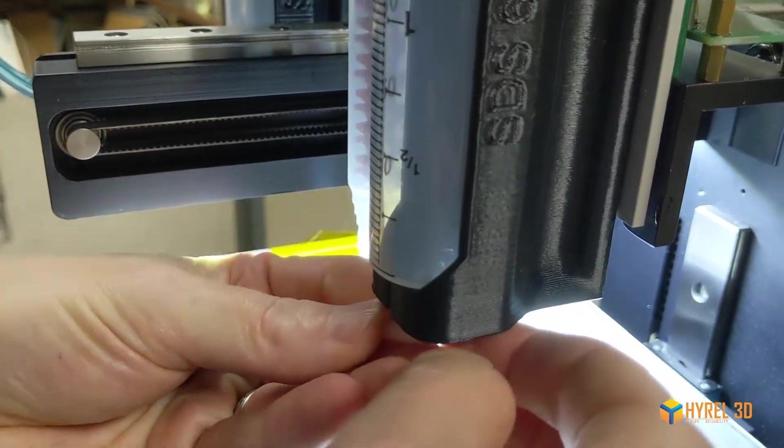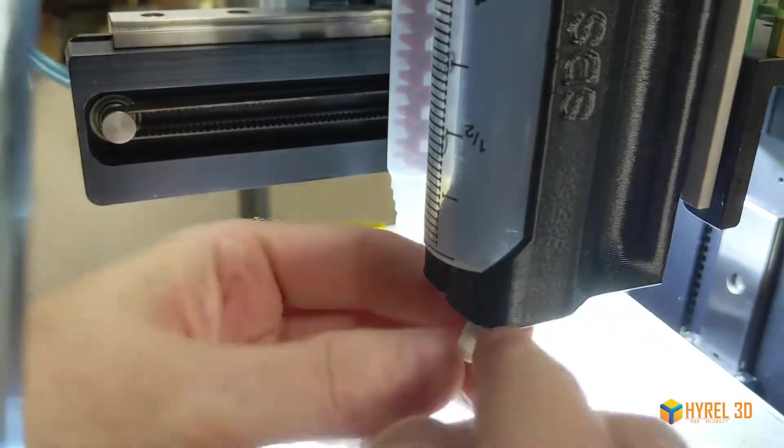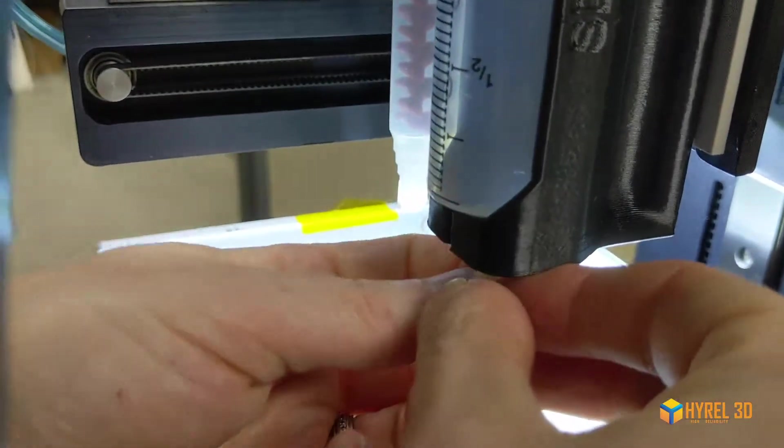The lure connectors have threads 180 degrees apart, so if one lines up wrong, take it out and twist at 180 degrees and then try again.